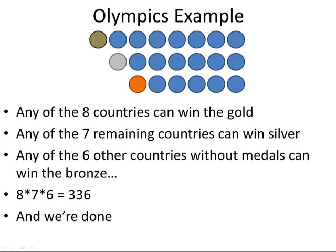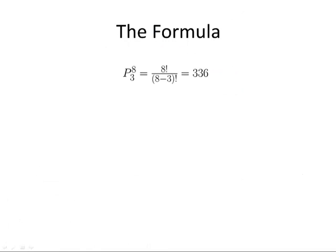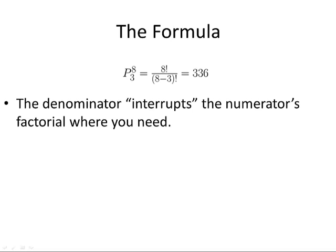And then we're done. So why would we want to go and complicate things with this messy permutations formula? Let's have a look. Here's the formula, which equals 336. What's up with this eight factorial on top and five factorial on the bottom? This denominator is going to interrupt the numerator's factorial where you need it.